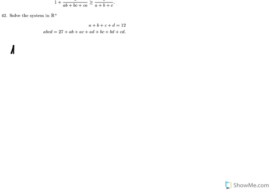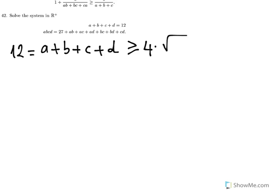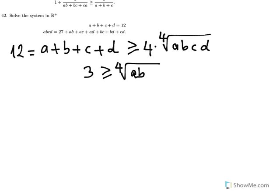So we are given that 12 equals A plus B plus C plus D, and here if we apply the arithmetic mean–geometric mean inequality. Since we have four terms, that is four times the fourth root of ABCD. If we divide both sides by four, we get that 3 is greater than or equal to the fourth root of ABCD. Raising both sides to the fourth power, we get that 81 is greater than or equal to ABCD.